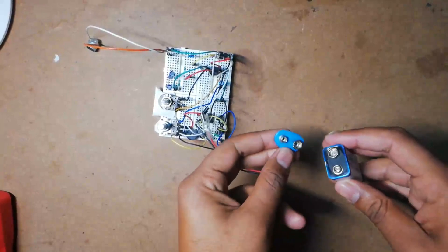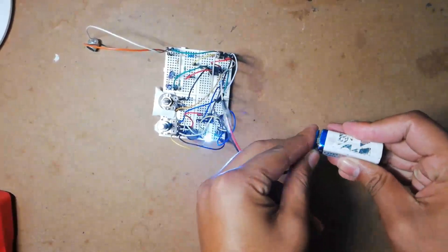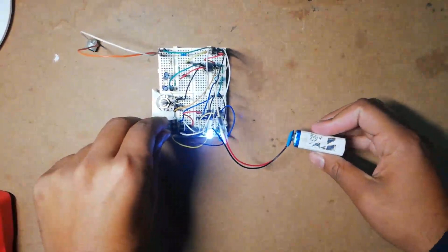Now your circuit is ready, connect the battery and adjust the potentiometer.